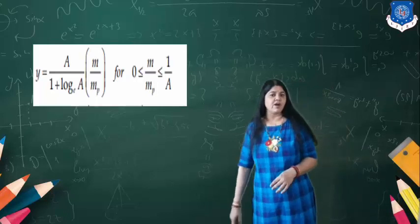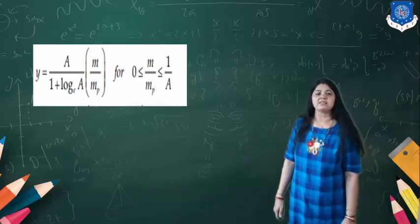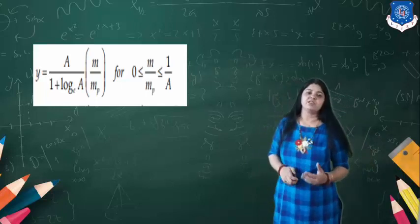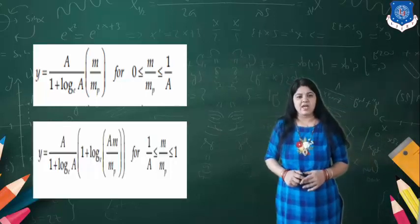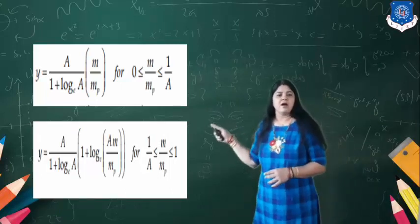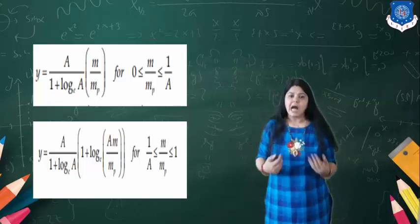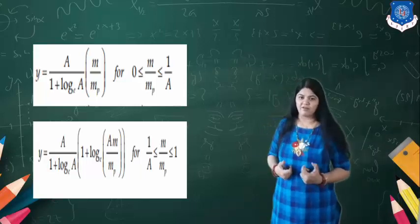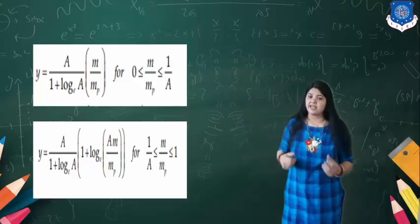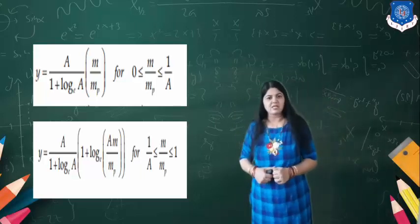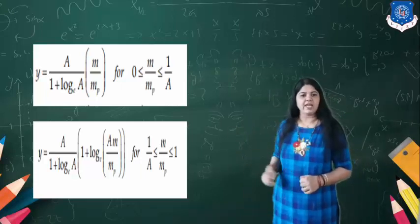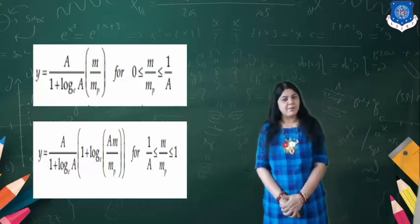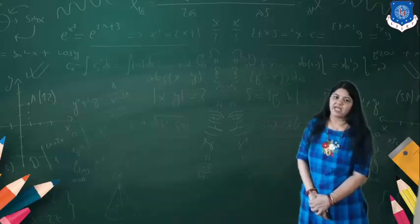The equation for A-law is: Y = (A / (1 + log A)) × (M/Mp), where M/Mp is between 0 and 1/A. For the second region where M/Mp is between 1/A and 1, the equation is Y = (1 + log(A × M/Mp)) / (1 + log A). Here Y is the output, and A = 87.6 gives the maximum companding value.